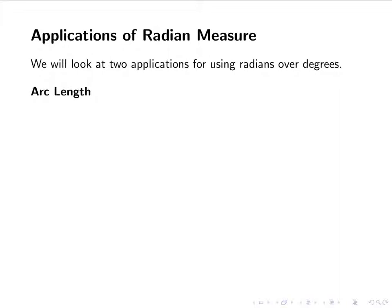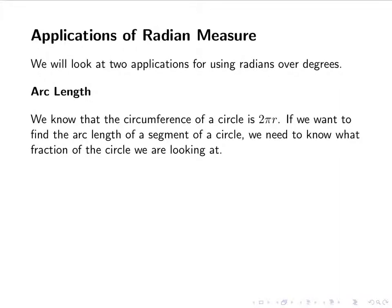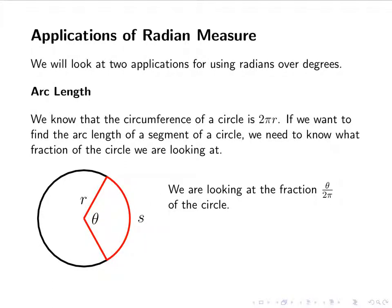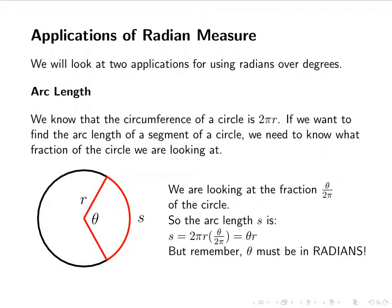We're going to look at two applications. The first one is arc length. We know that the circumference of a circle is 2πr, and if we want to find the arc length of a segment of a circle, we need to know what fraction of the circle we're looking at. For instance, I've got a circle, radius r, some angle θ, and then the arc length is denoted by s. We're looking at the fraction θ over 2π of the circle. So the arc length is 2πr times the fraction. The 2π's cancel, and we're left with θr. Remember that this only works if θ is in radians because the 2π comes from radians.